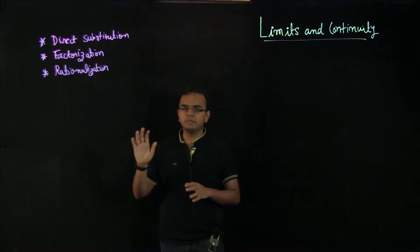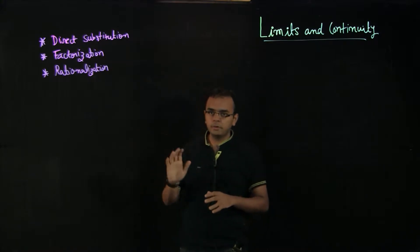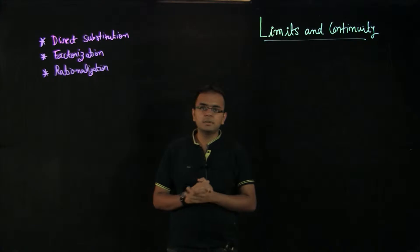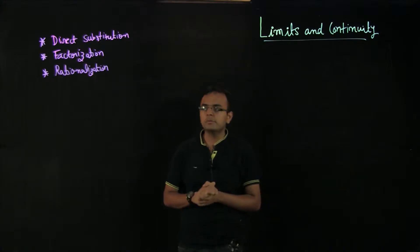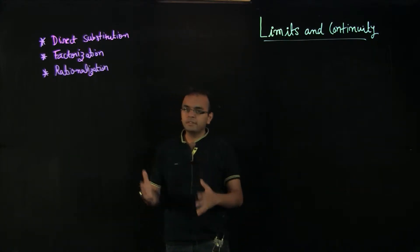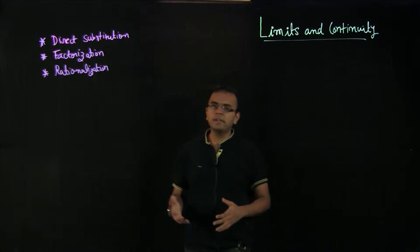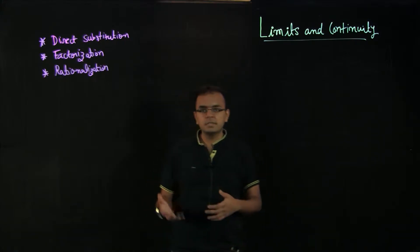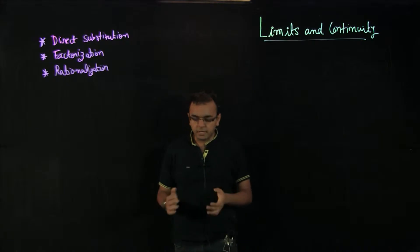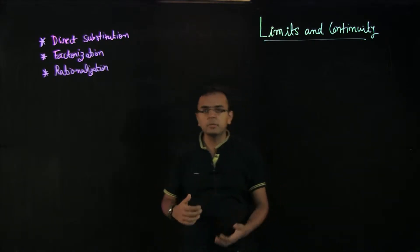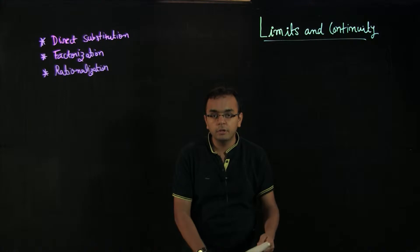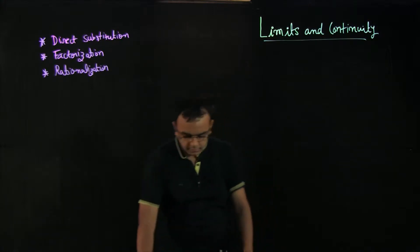Specifically in this video I will be touching upon three types of problems in limits and continuity. One is direct substitution, which is the simplest type where you just directly substitute and get an answer. Two is factorization, where you simplify through factorization, and three is rationalization, where you simplify through rationalization. Without wasting any time, let us directly go into problem solving.